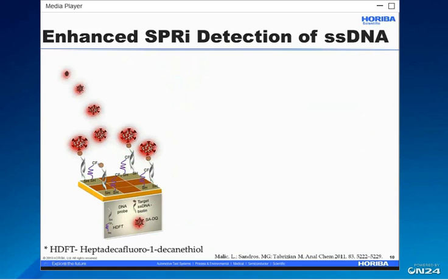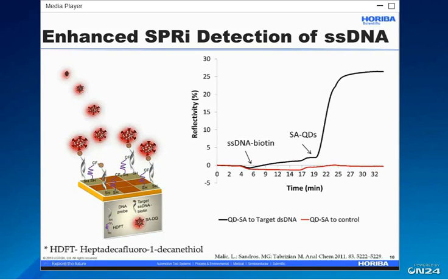I will introduce my early work with the SPRI platform. Here I collaborated with Drs. Malik and Tabrizian to investigate if quantum dots can enhance the SPRI signal. We deposited silylated single-stranded DNA onto the gold surface, followed by adding Heptadecafluoro-1-decanthiol as a blocking molecule, and then introduced a biotinylated complementary DNA strand at a concentration of 50 nanomolar — a range we can detect comfortably with SPRI. We observed a 2.5% change in reflectivity after the addition of the complementary DNA strand. However, after the introduction of the quantum dots, we saw a 10-fold signal enhancement.